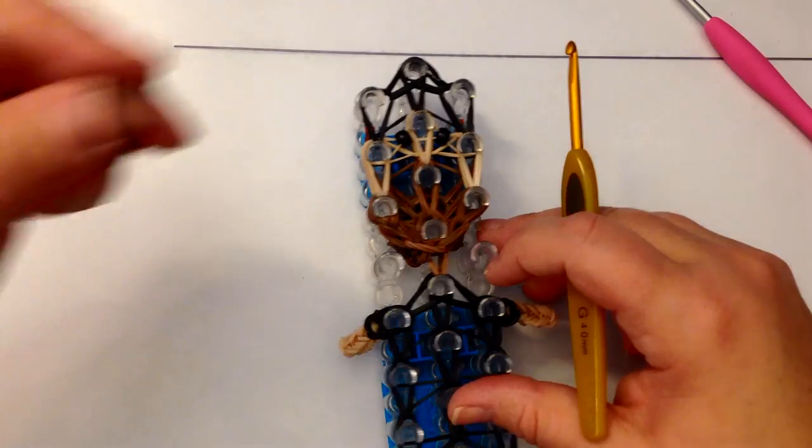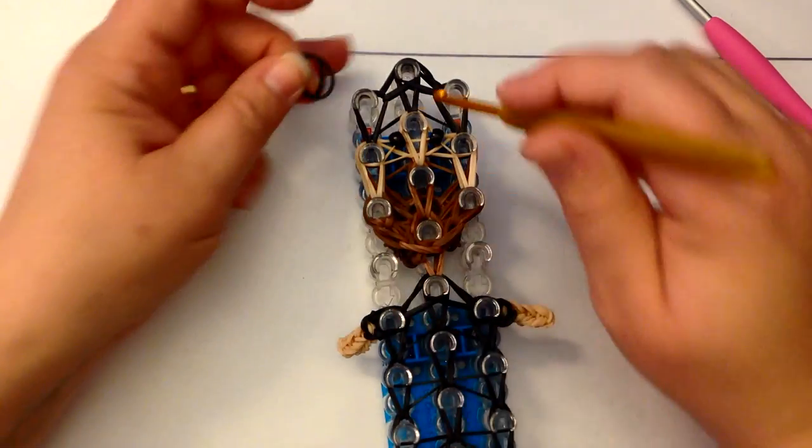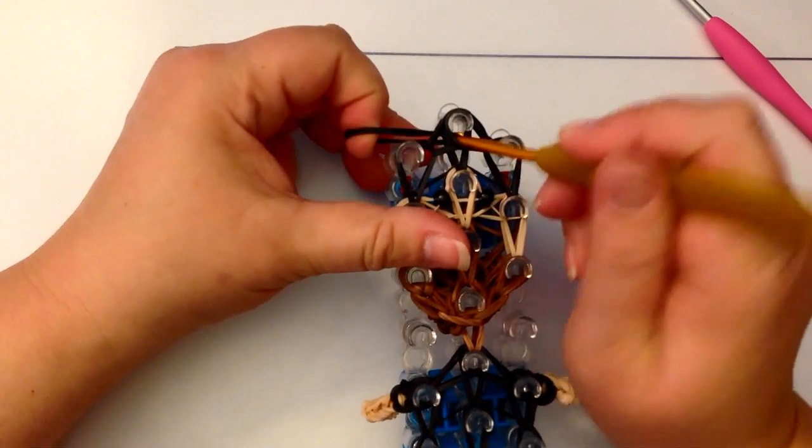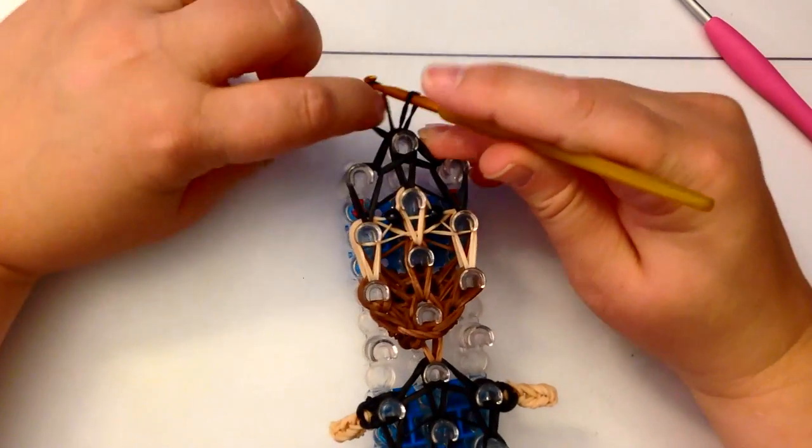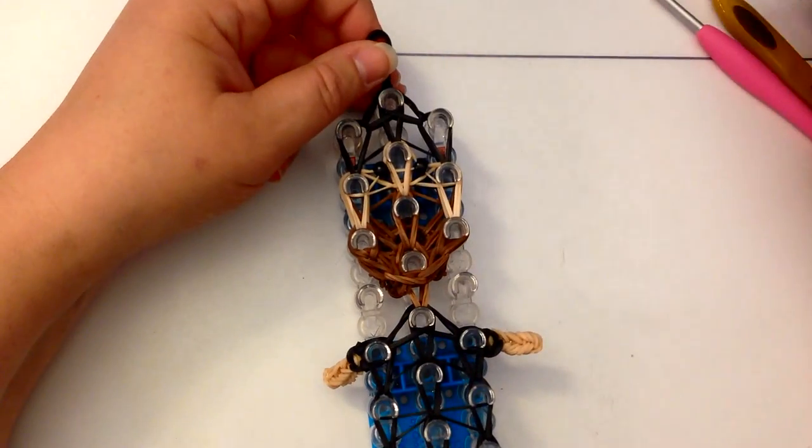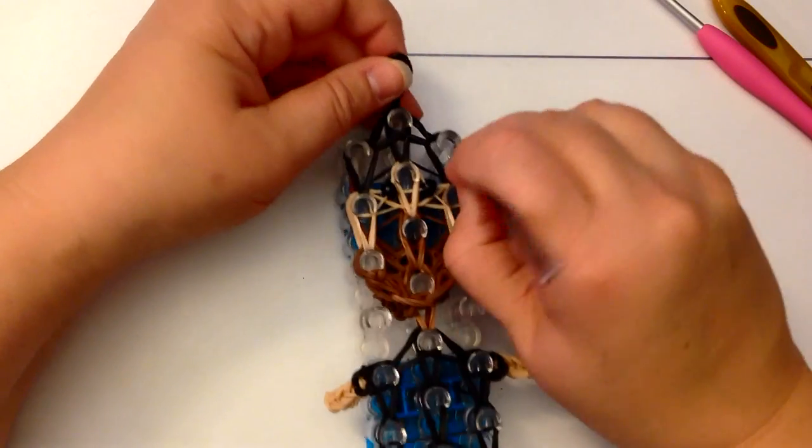You're going to take two black bands, place down here. And we'll drag them back through. Reclaim. One over the other. And pull tight. And we're ready to take this off the loom.